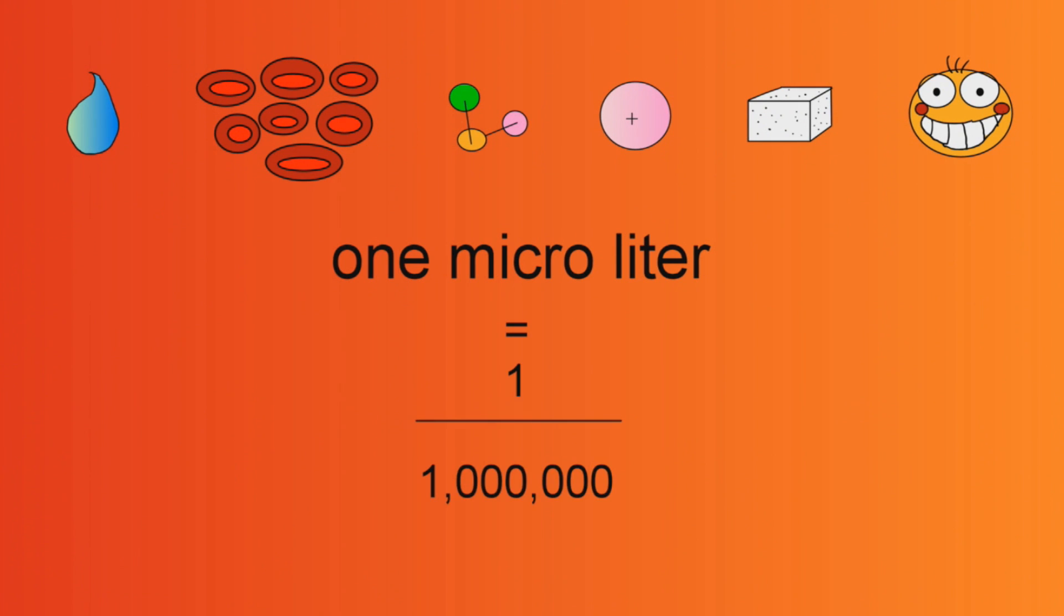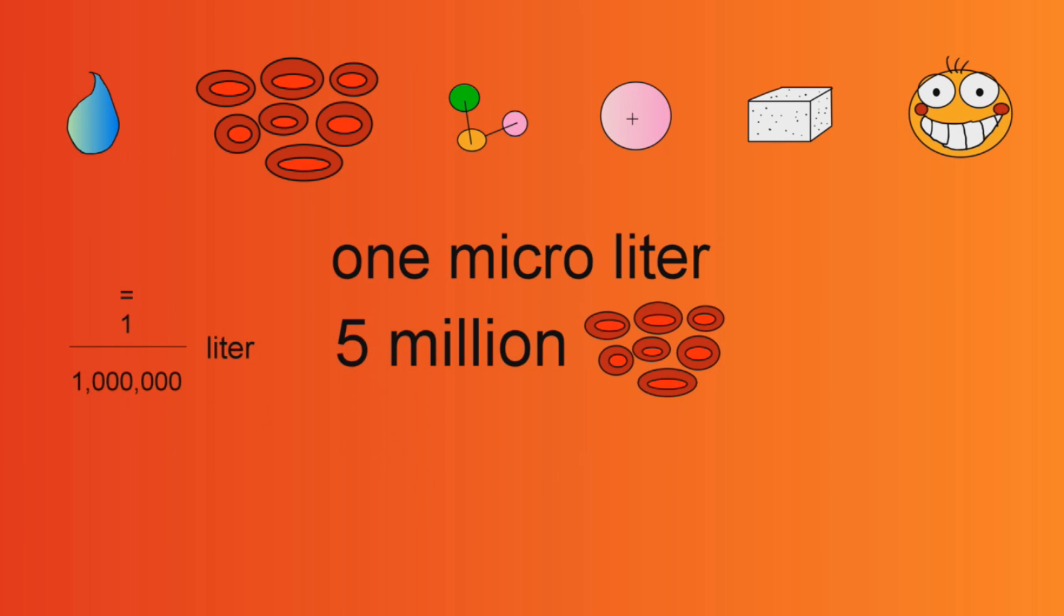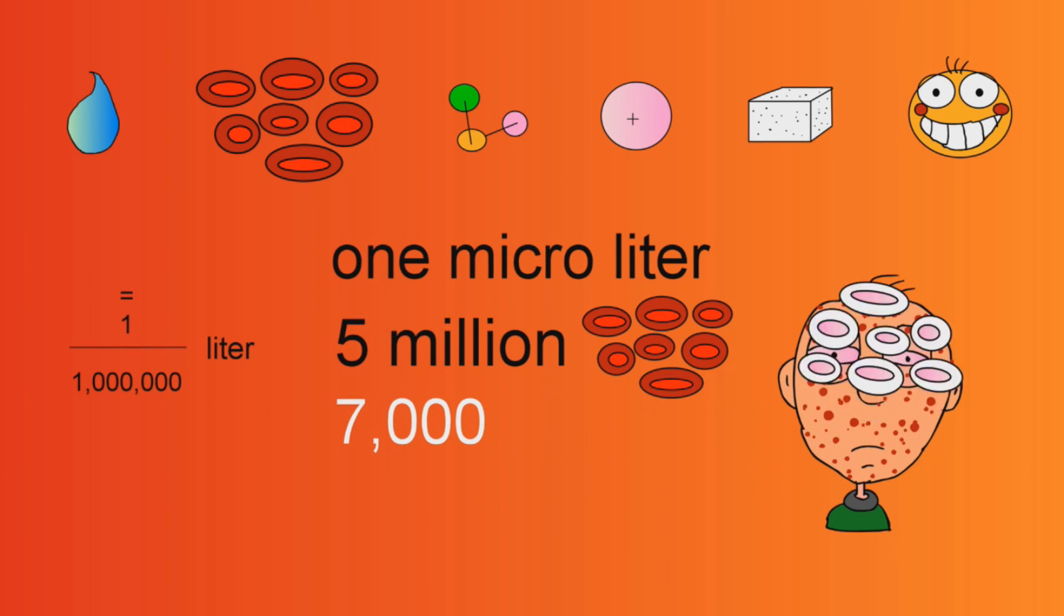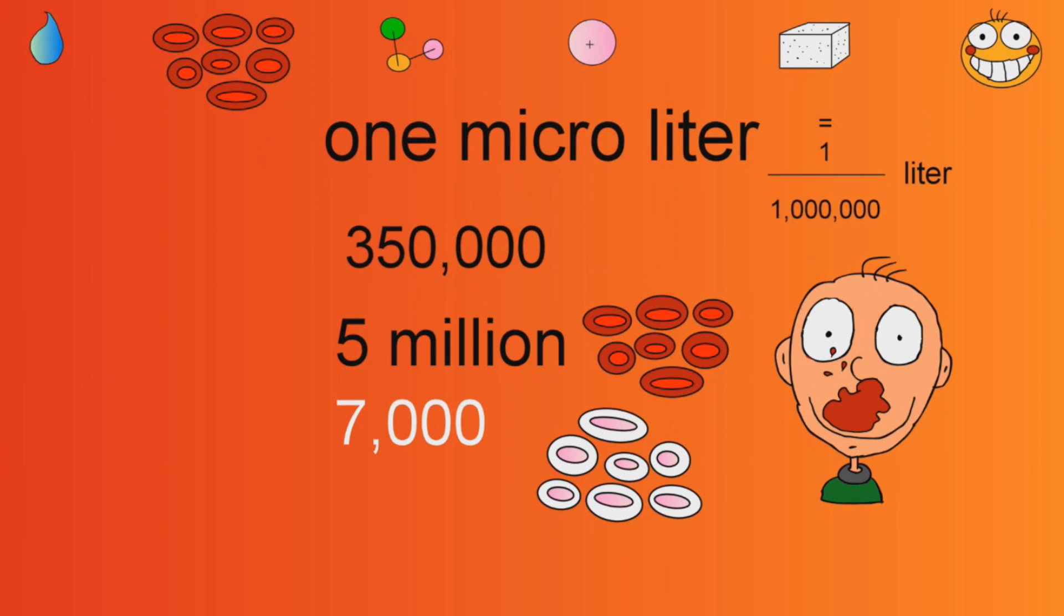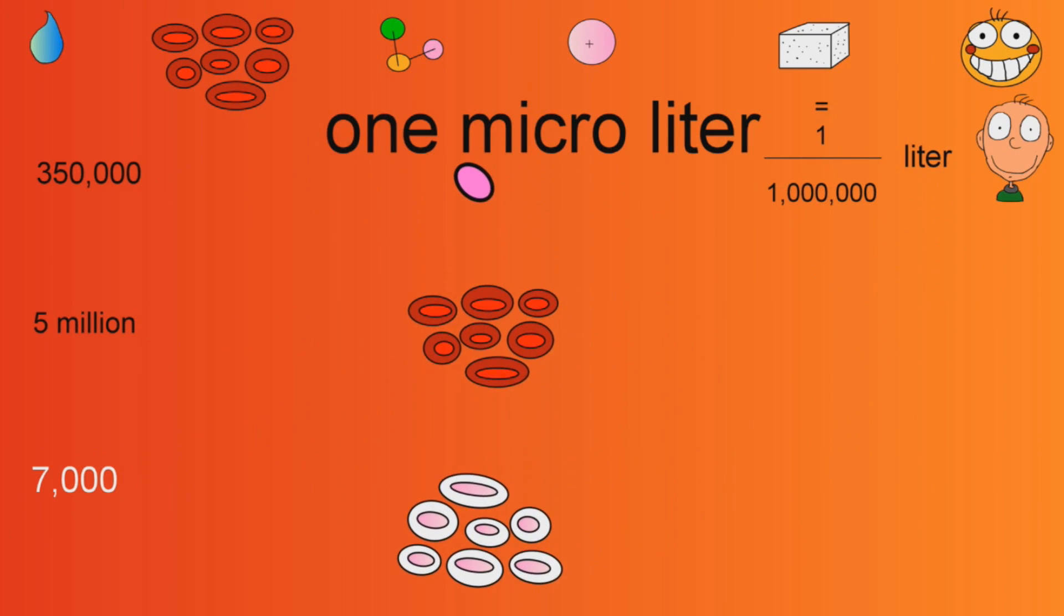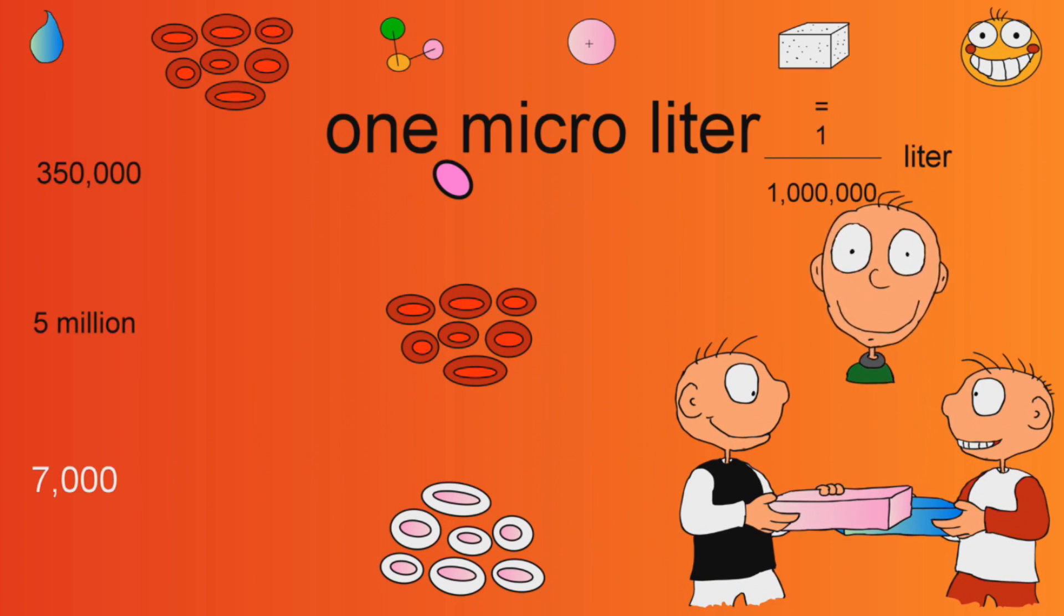One microliter, which is one millionth of a liter, contains about 5 million red blood cells, also 7,000 white blood cells which help fight infections, and 350,000 platelets which can help stop bleeding. These cells all work together in sync to make sure you're happy and healthy.